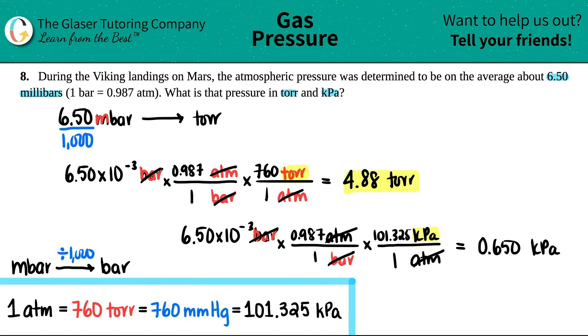And just know that all three of these different pressure units are equivalent to each other. So 4.88 torr is the same as 0.650 kilopascal which is the same as 6.5 times 10 to the negative three bar, and it's the same as 6.5 millibar. So it's just basically expressing the same amount of pressure just in different units. That's all we're doing here.